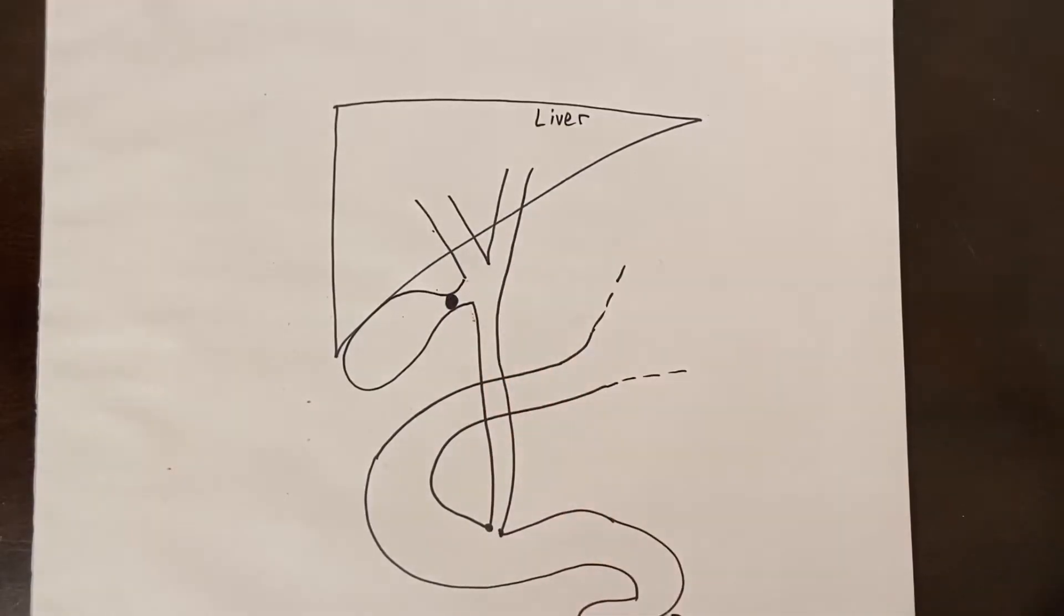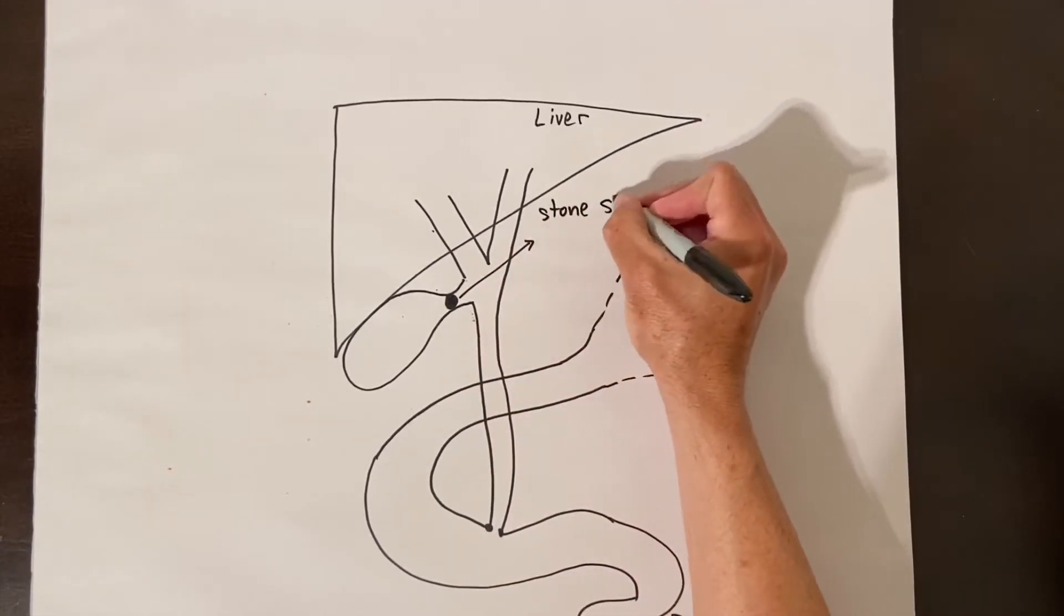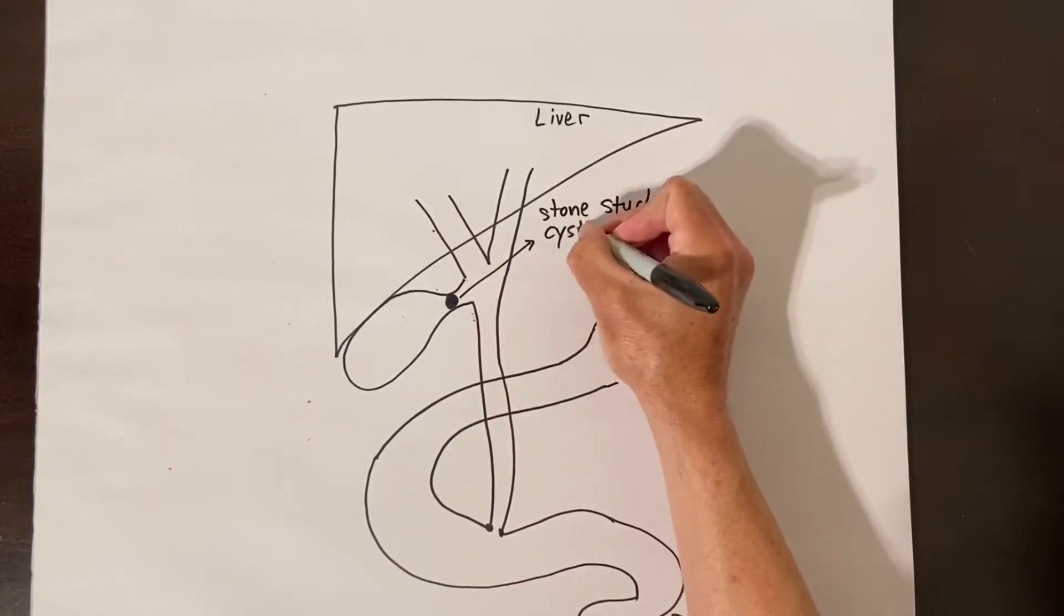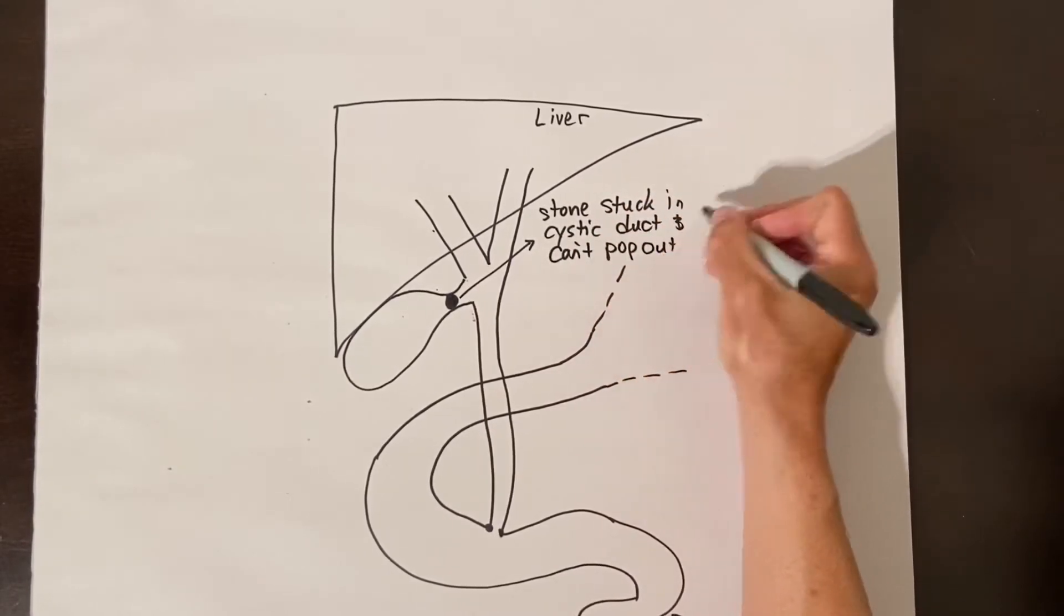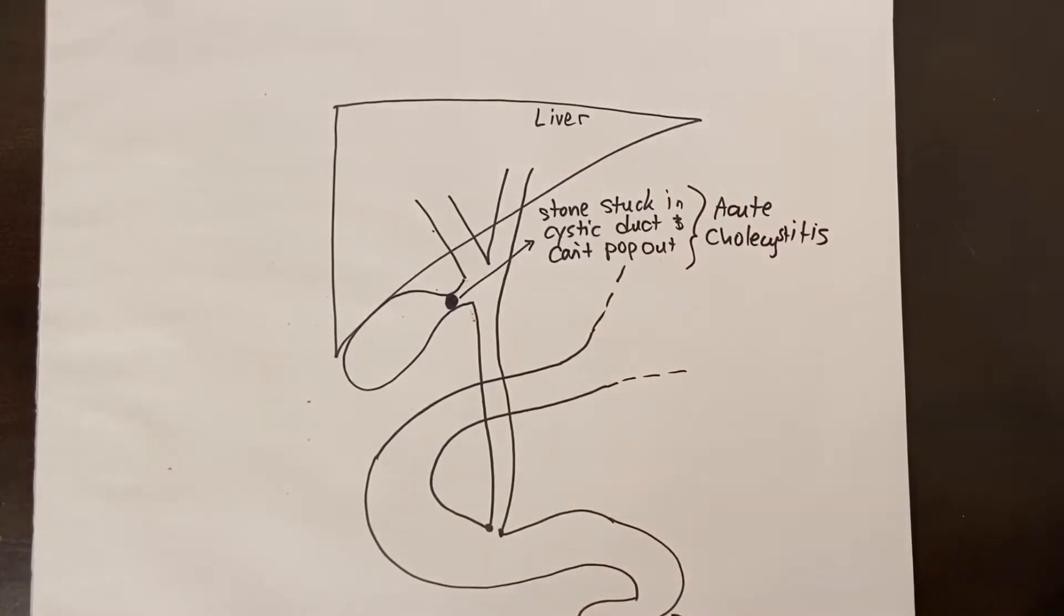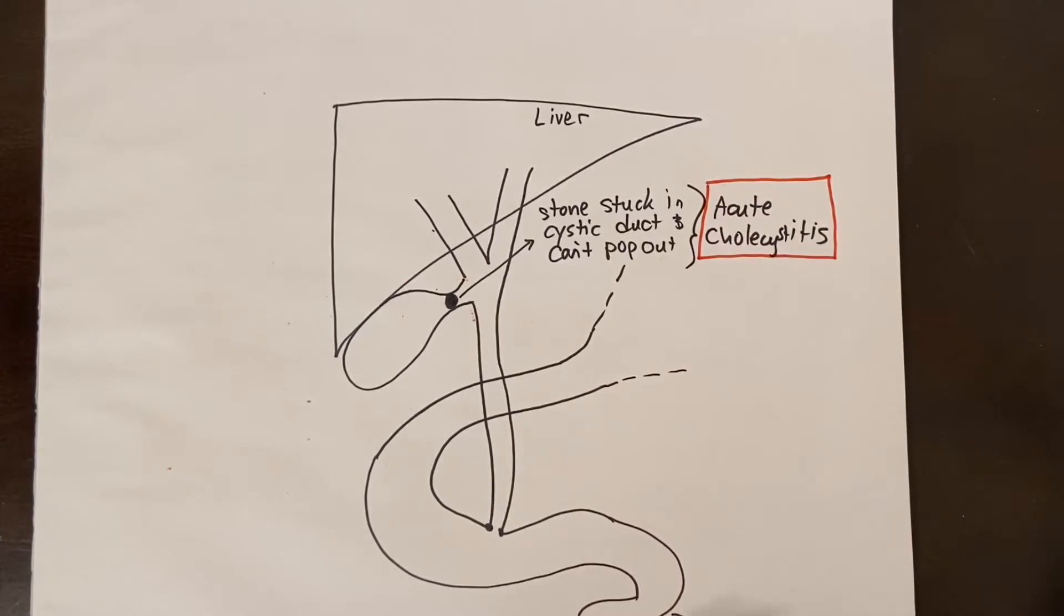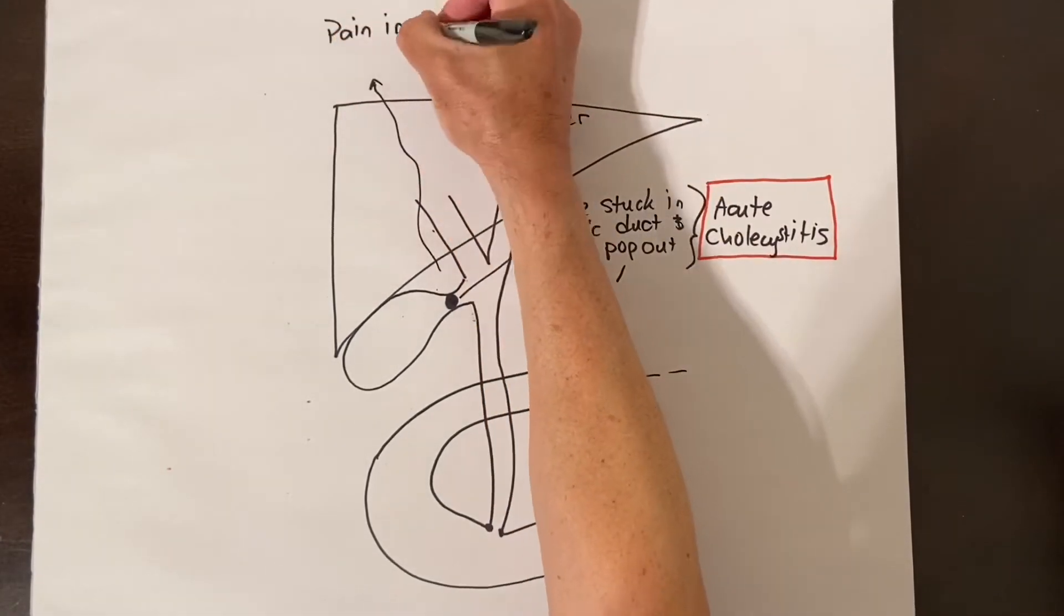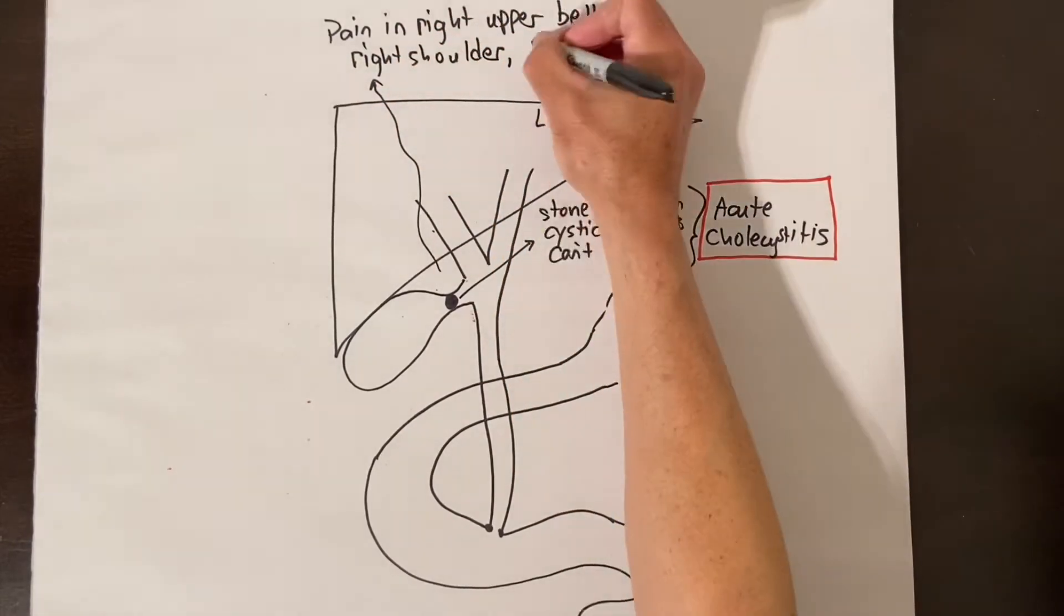The next level of the problem though is when the stone is stuck in the cystic duct opening and stays there. The bile then cannot get out of the gallbladder at all and bacteria start to grow in the bile and the gallbladder gets infected. This is called acute cholecystitis. Acute cholecystitis has the same symptoms of right upper abdominal pain and nausea but also fevers and elevated white blood cell count on your lab blood work.